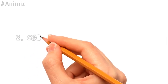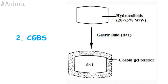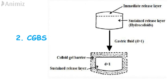The second type is the colloidal gel barrier system, which is in the form of a tablet. The drug is mixed with gel-forming colloids, and upon contact with gastric fluid, the hydrocolloids gel hydrates and forms a gel barrier which controls drug release. Air entrapped in the polymer helps maintain buoyancy. It can also be made as a bilayer tablet, where the immediate release layer delivers the initial dose rapidly, and the sustained release layer absorbs gastric fluid, forms a colloidal gel barrier, and controls drug release and buoyancy for an extended period.